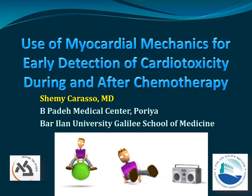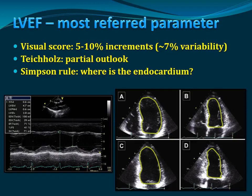The most preferred parameter that has always been used is the ejection fraction, which is measured by various methodologies. The first one is the visual score, and you can see that there's a 5% to 10% increment, so it's a very difficult parameter to follow and to see minor or minute changes. The visual score also requires a lot of training.